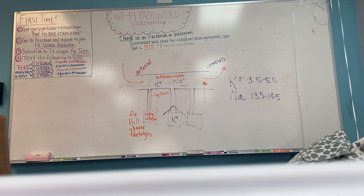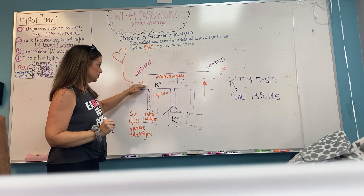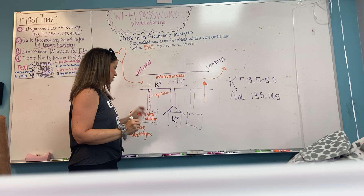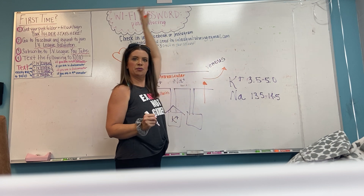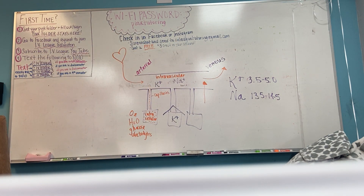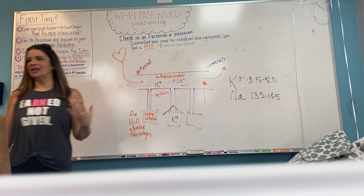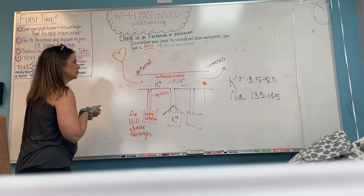Heart pumps arterial blood into the vessel, down the capillaries, into the cells. The cells eat and drink and be merry, and whatever's left over gets pulled up into the venous end and goes back to the heart to redo its thing. That's basic fluid balance. Now we need to talk about what happens when this goes wrong — this is called the inflammatory process, and you will need this for every single disease process in nursing school.